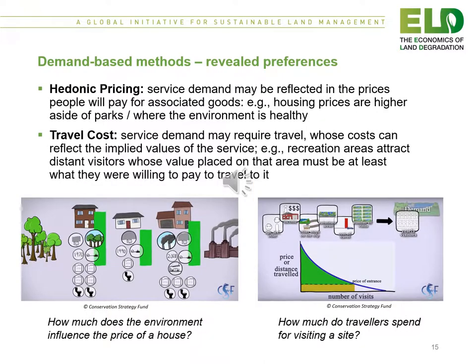The next two slides illustrate four demand based methods, starting with hedonic pricing, where service demand may be reflected in the prices people will pay for associated goods — for example, house prices may be higher alongside parks where the environment is healthy. The second is the travel cost method, where service demand may require travel whose costs can reflect the implied values of the service. For example, recreational areas attract distant visitors whose value placed on that area must be at least what they are willing to pay to travel to it.